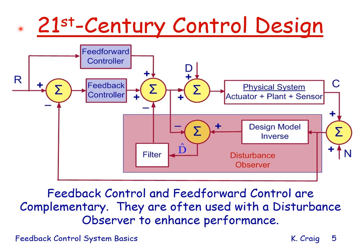21st century control design is more complicated than the basic feedback control system shown previously. The 21st century controller consists of three elements: a feed-forward controller, a feedback controller, and a disturbance observer. The actual physical system consists of the actuator, the plant, and the sensor. The first step in design is to model the physical system by making simplifying assumptions, creating a mathematical model by applying the laws of nature.